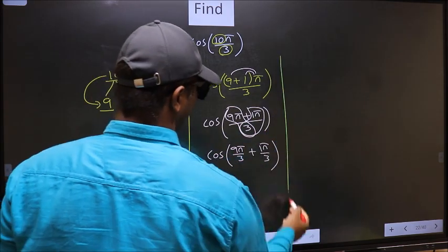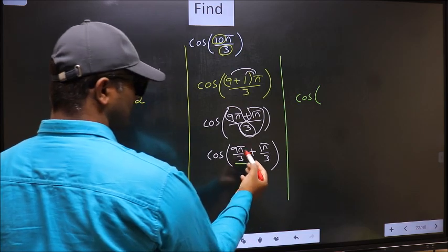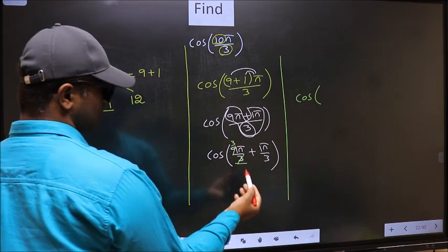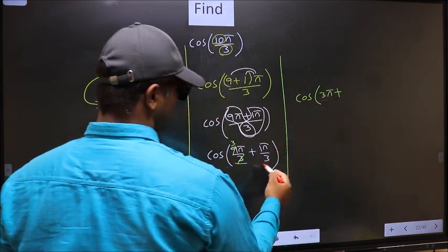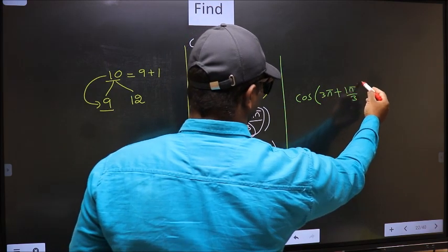Next, cos. Now here you should cancel: 3 ones, 3 threes. So we get 3π plus, this no change, 1π by 3.